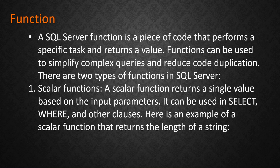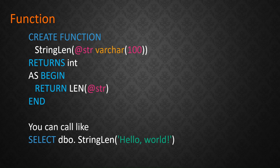The first function type is a scalar function. A scalar function returns a single value based on the input parameters, and it can be used in SELECT, WHERE, and other clauses. Here is an example: CREATE FUNCTION string_length(@str VARCHAR(100)) RETURNS INT BEGIN RETURN LEN(@str) END. So you pass a string and it returns the length. You can also do a SUM operation and return it based on a filter.